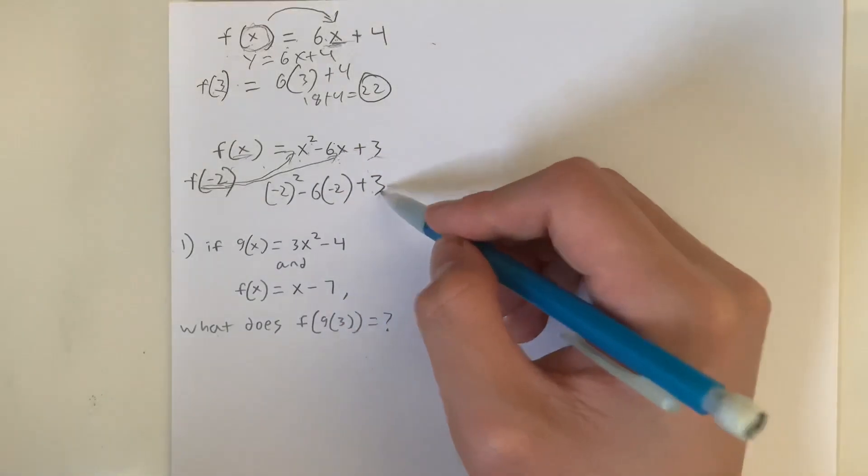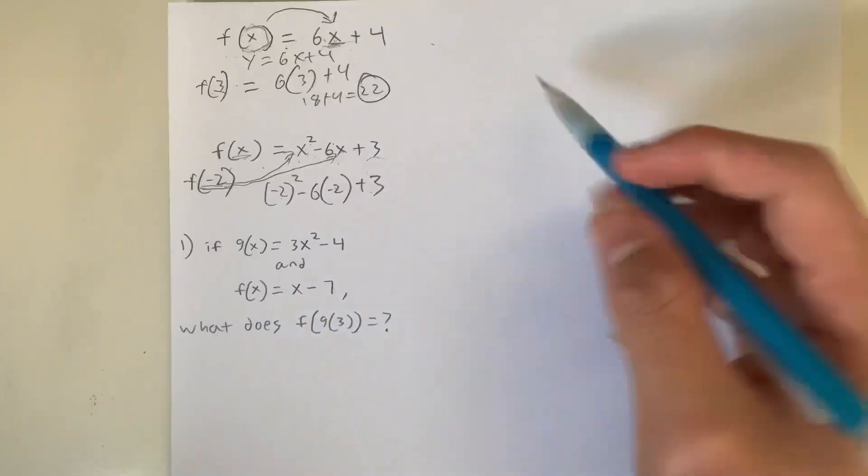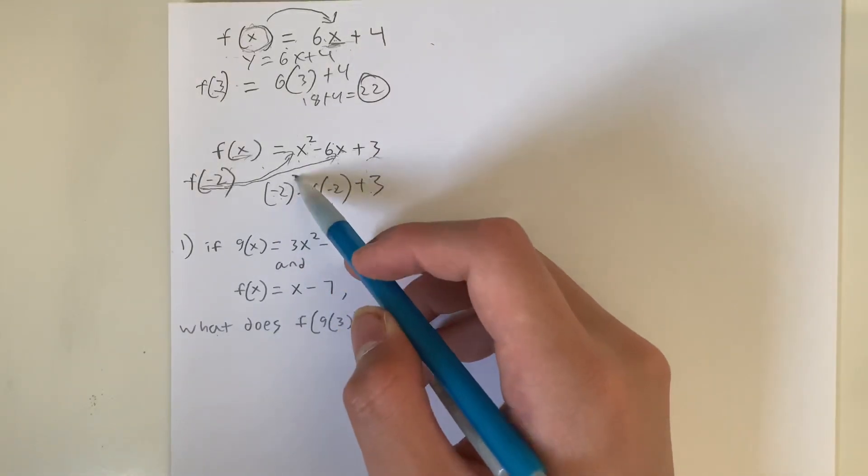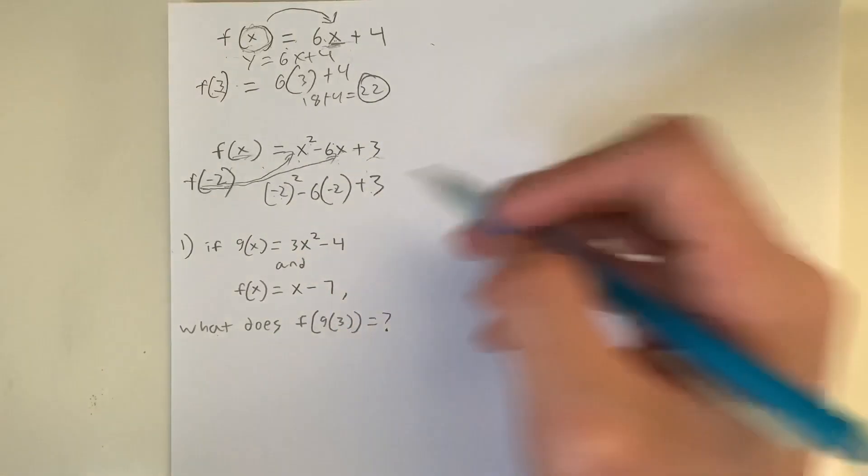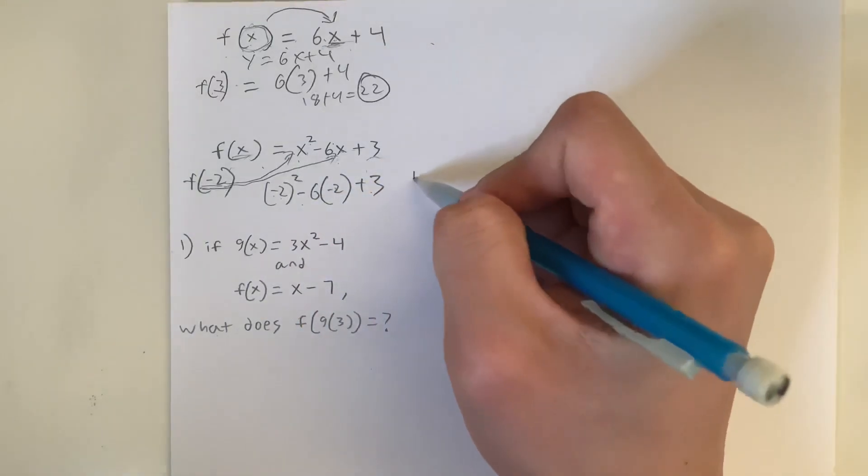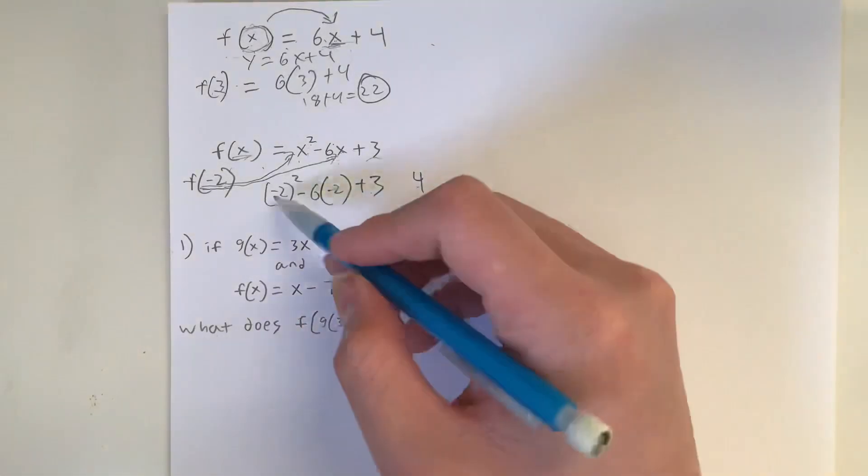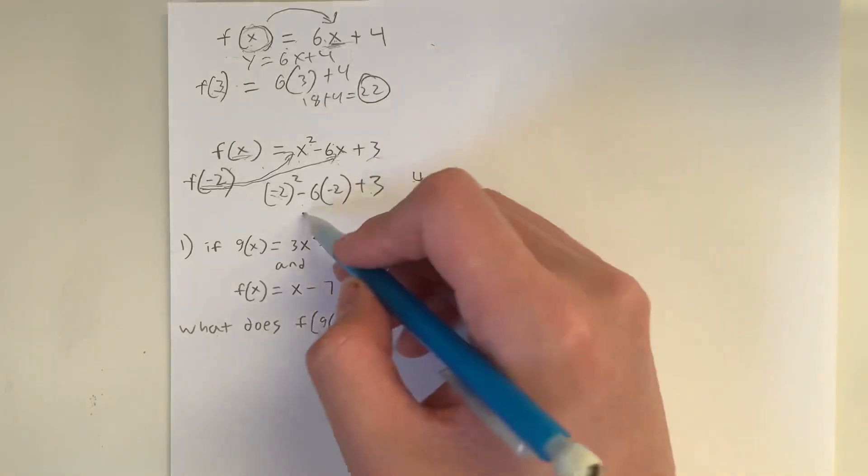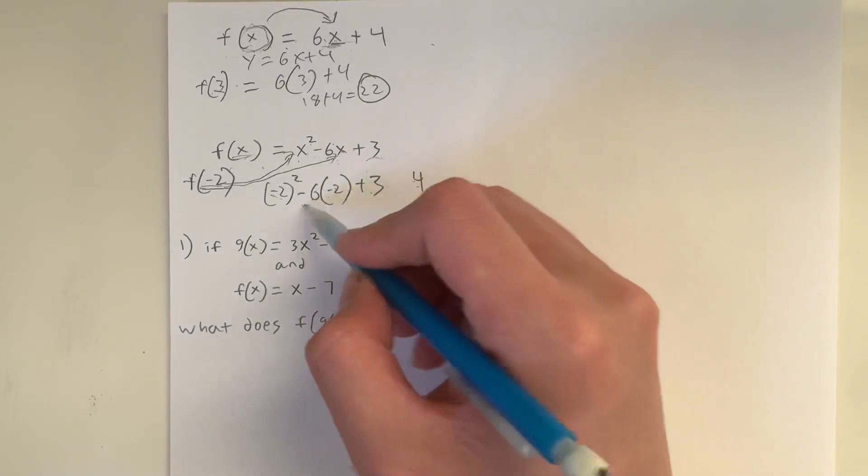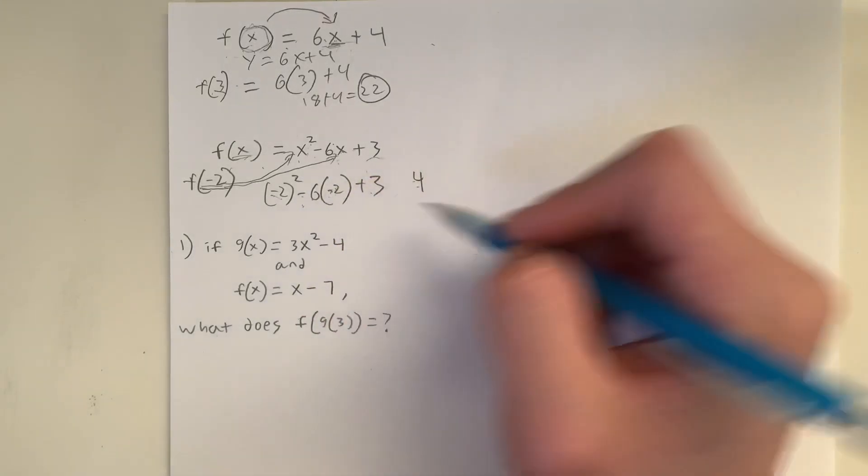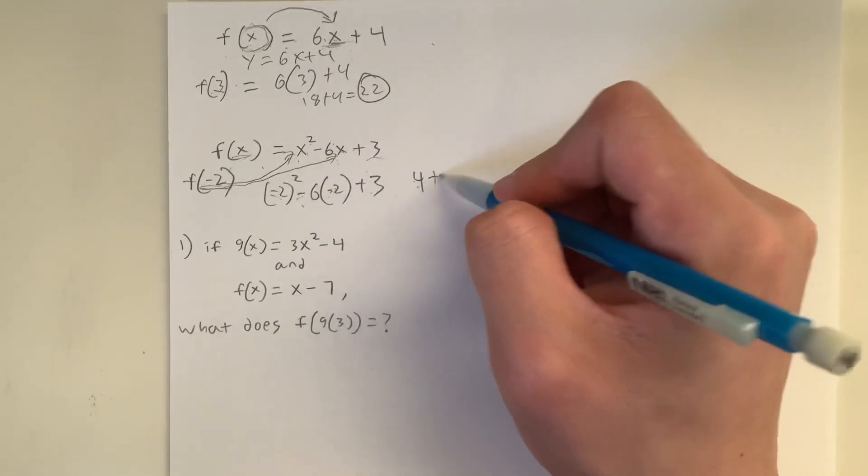If it's just by a number, you just keep the number in the next step. So now we simplify. Negative 2 squared is negative 2 times negative 2, which is going to be positive 4. 2 times 2 is 4. Negative times negative is positive. Minus 6 times negative 2. Negative times negative is positive. Again, 6 times 2 is 12.